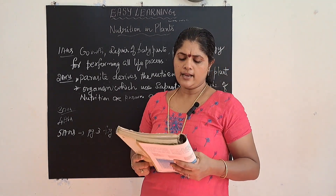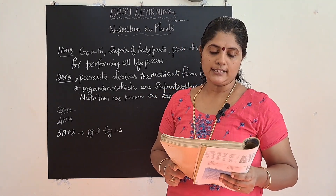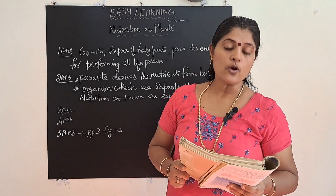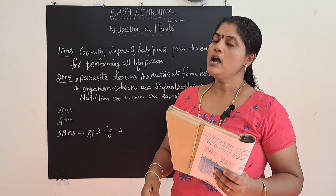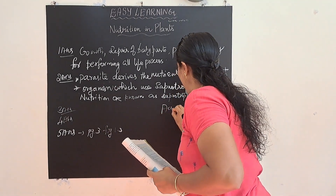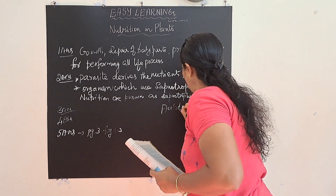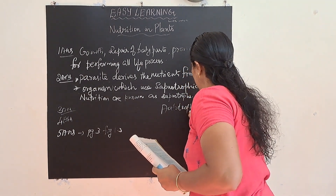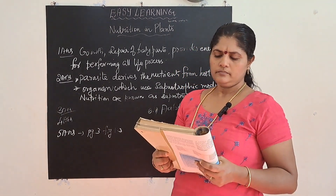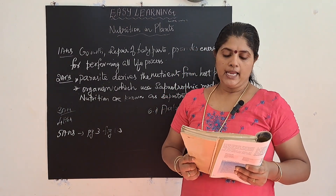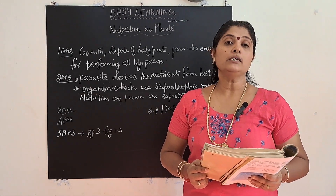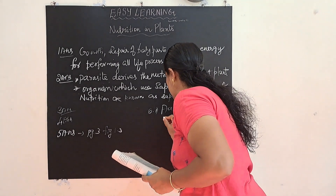Next, fill in the blanks. Question A: green plants are called dash since they synthesize their own food. Green plants are considered to be autotrophs — so the answer is autotrophs. Question B: the food synthesized by the plant is stored as — the answer is starch.